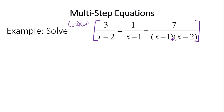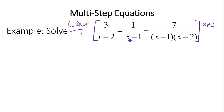For the last fraction, you notice both x-2 and x-1 are already in the LCD, so we don't need more copies. Before moving forward: note that we have the variable in the denominator — that's why it's a rational equation. We must watch for values that make the denominator zero. x-2 equals 0 when x is 2, so x cannot equal 2. And x-1 equals 0 when x equals 1, so x cannot equal 1. These two values are not allowed.